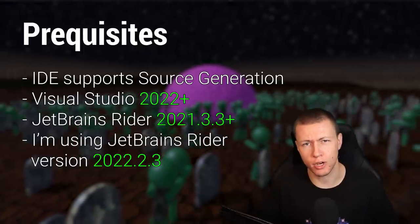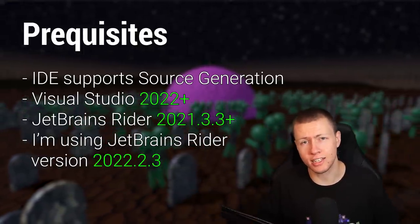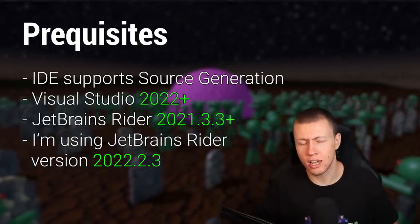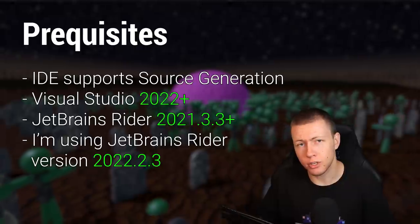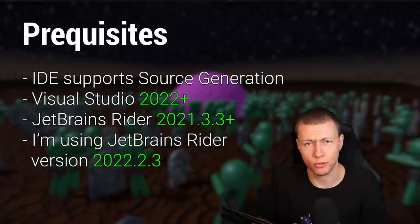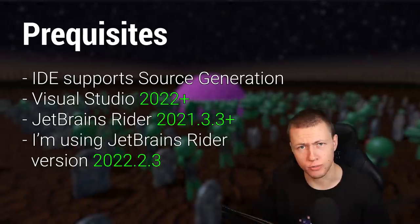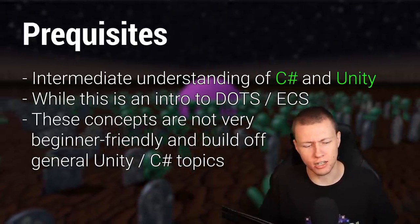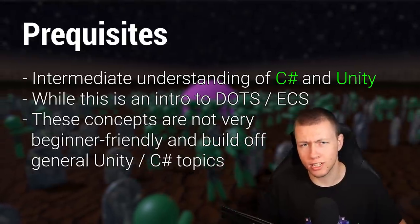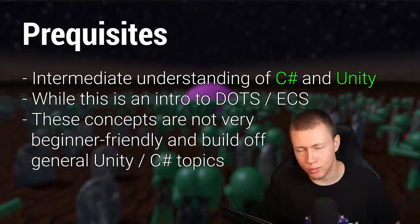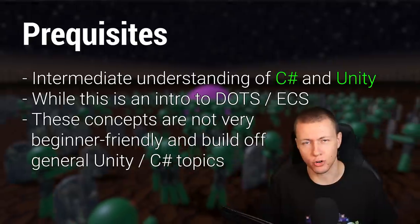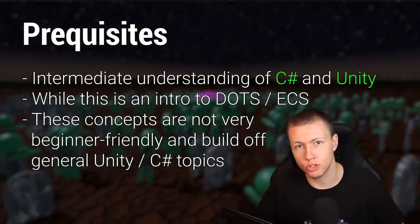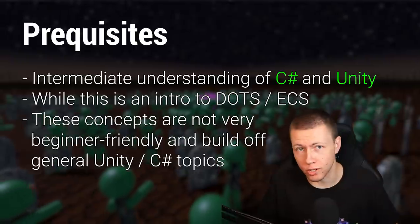I'm using JetBrains Rider 2022 in this video. The key is that your IDE supports source generation, because Unity's data-oriented technology stack heavily relies on it — Unity does a lot with source generation on the back end to produce more efficient code. I'd also recommend at least an intermediate understanding of Unity and C# before following along, as this isn't an introduction to Unity and C# in general.